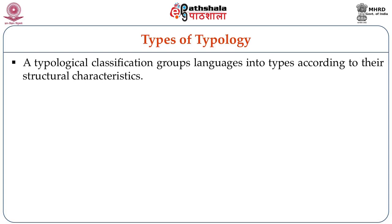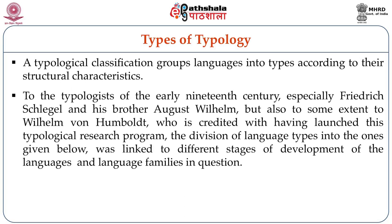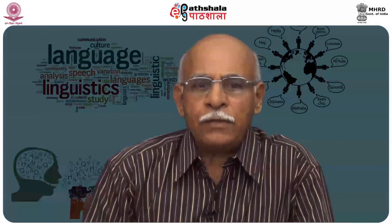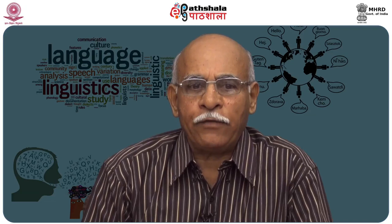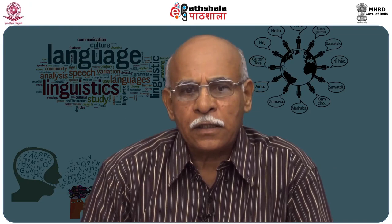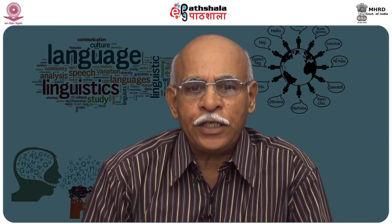A typological classification groups languages into types according to their structural characteristics. To the typologists of the early 19th century, especially Frederick Schlegel and his brother August Wilhelm, but also to some extent Wilhelm von Humboldt — who is credited with having launched this typological research program — the division of language types was linked to different stages of development of the languages and language families in question. The most famous typological classification, frequently invoked in the 19th century in support of an evolutionary theory of language development, was proposed by August Wilhelm Schlegel's tripartite classification of morphological types of 1818.